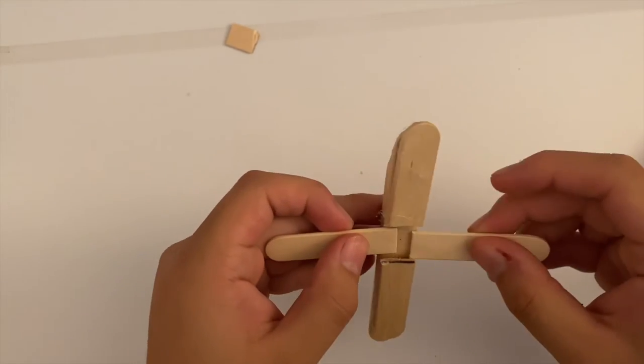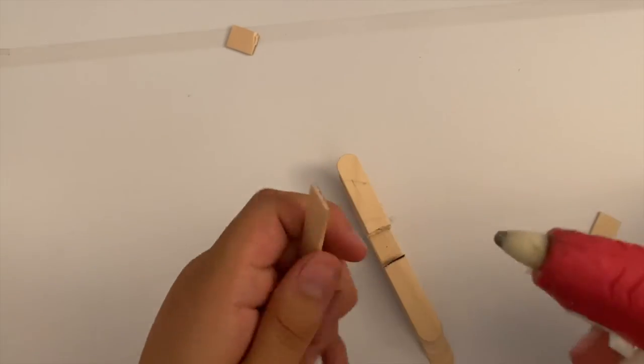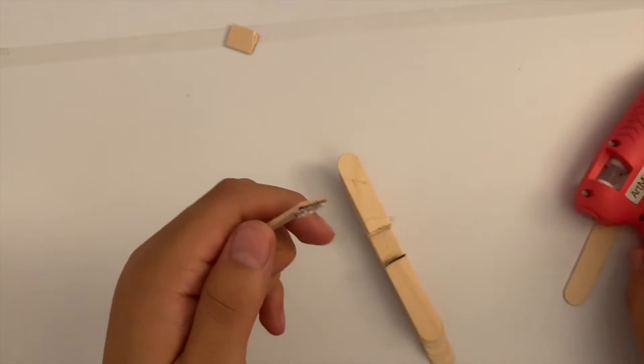Now with those pieces you just cut, start to glue them onto the gap you created. These will make up your wings for your plane.